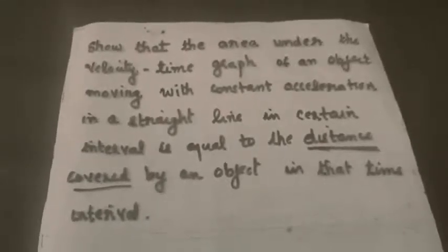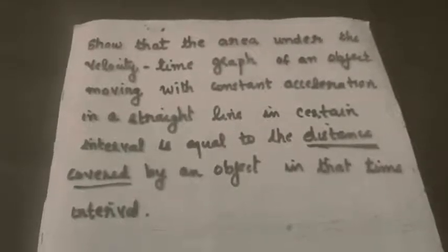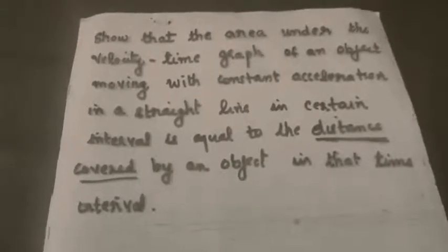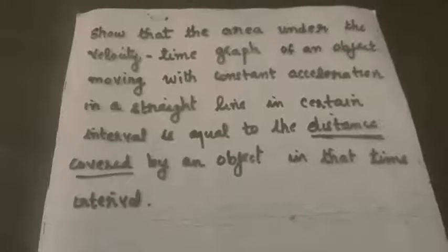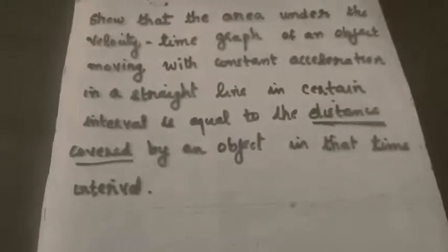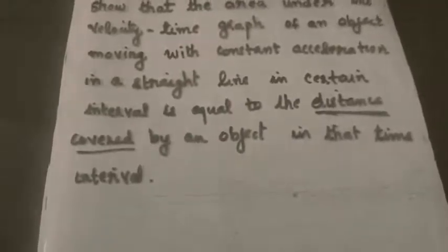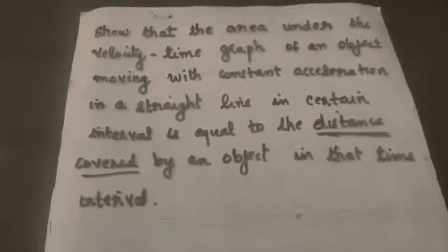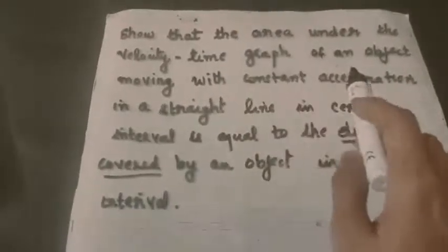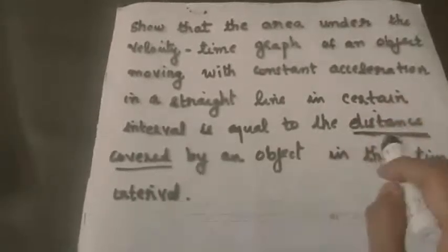Now we are going to see a problem related to this topic. The question is: show that the area under the velocity-time graph of an object moving with constant acceleration in a straight line in a certain interval is equal to the distance covered by the object in that time interval.